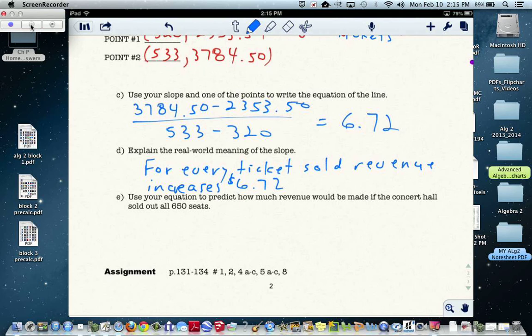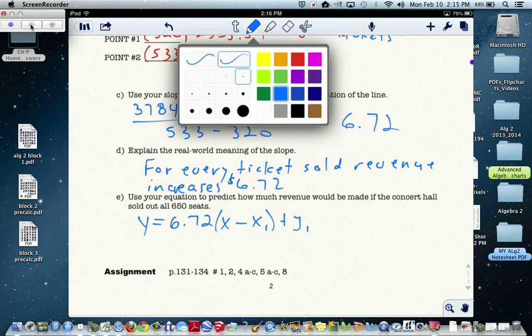Use your calculation to predict how much revenue would be made if the concert hall sold out all 650 seats. So the idea would be, I can write my slope intercept form, or my point slope form, excuse me, y equals 6.72 times x minus x1 plus y1.